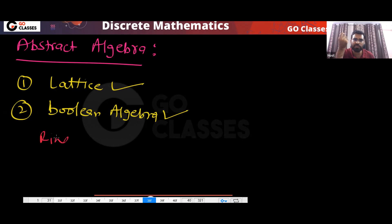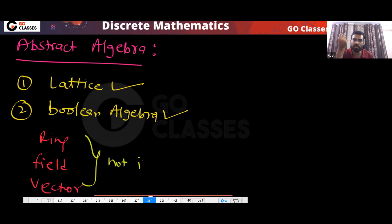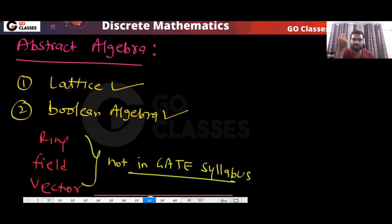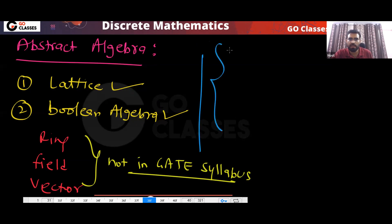In abstract algebra, we have concepts called ring, field, and vector. These concepts are not in the GATE syllabus, so we will not study these for the GATE exam. But they are part of abstract algebra. We have already seen lattice and Boolean algebra.